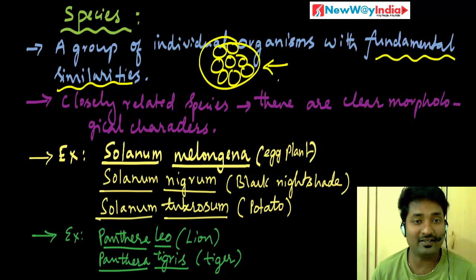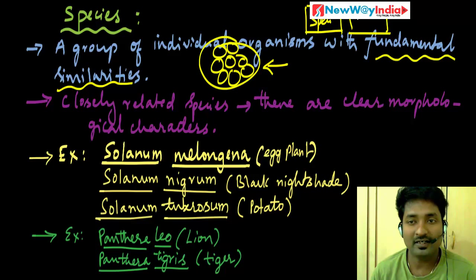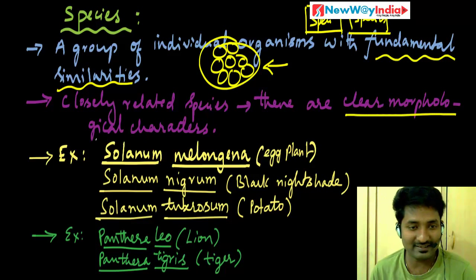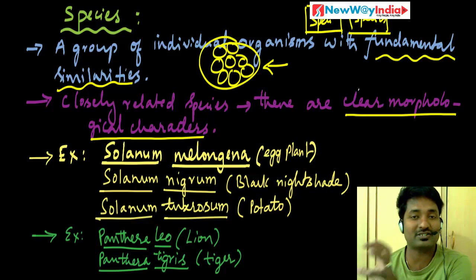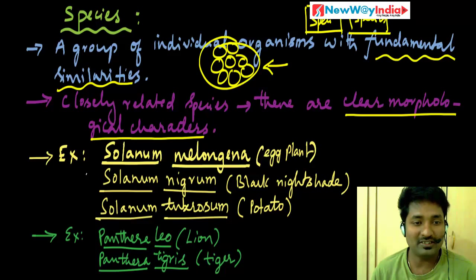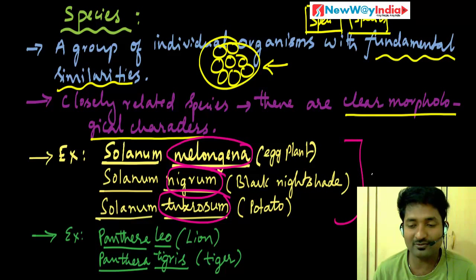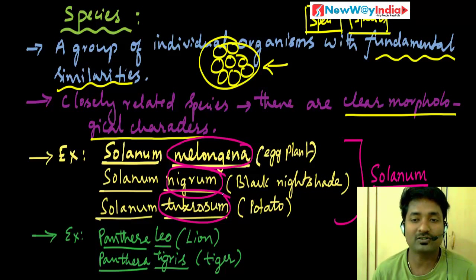Closely related species — if you take two groups, each is one species. We place different species when there are clear morphological characters which differentiate one species from another. For example, Solanum melongena, Solanum nigrum, Solanum tuberosum — these are the same genus but different species. All three are differentiated based on morphological characters.